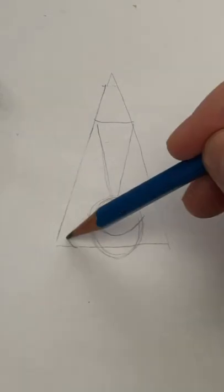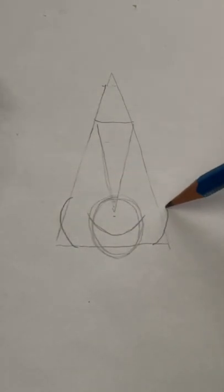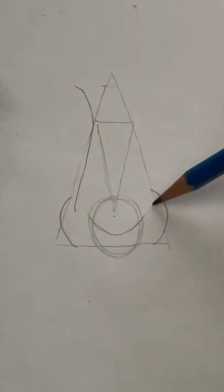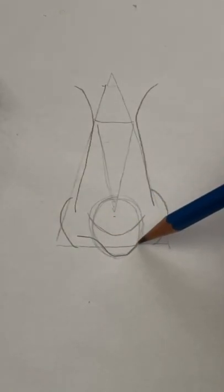Okay, now a U shape and a C and a backward C, and add these two curved lines. Okay, another U shape at the bottom and the basic outline is done.